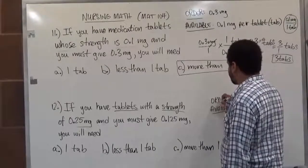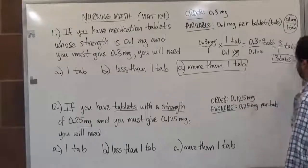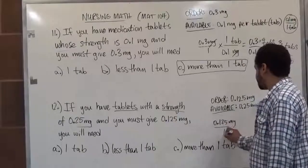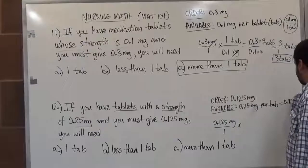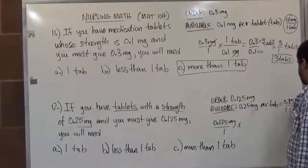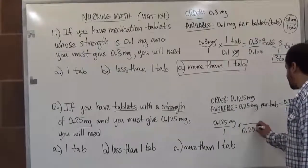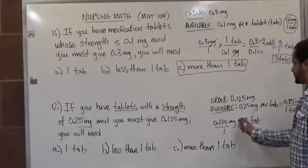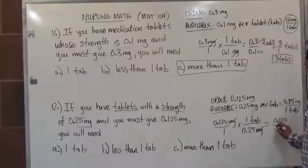Our order is 0.125 mg. We take our order, put it over 1, and multiply by our conversion factor. The conversion factor is 0.25 mg over one tab, and we flip it upside down, placing 0.25 on the bottom and one tab on top. We multiply straight across while the mg's cancel. On top we get 0.125 times 1, which is 0.125. On the bottom, 1 times 0.25 is 0.25. This result is in tabs.